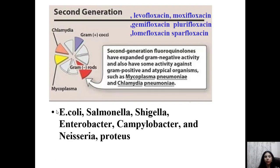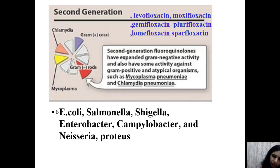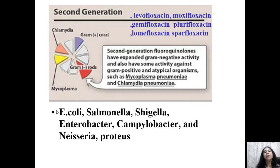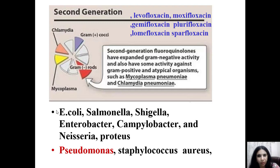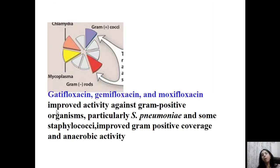Key organisms susceptible to fluoroquinolones include: E. coli (UTI), Salmonella (typhoid), Shigella (dysentery), Campylobacter jejuni (diarrhea), Neisseria gonorrhoeae (STD), and Proteus (nosocomial catheter-related UTI). For Proteus, Klebsiella, and Pseudomonas, aminoglycosides remain more potent. Fluoroquinolones have activity against Staph aureus but not MRSA.